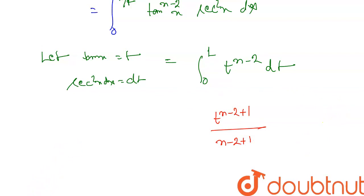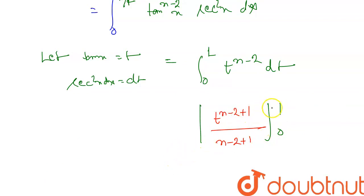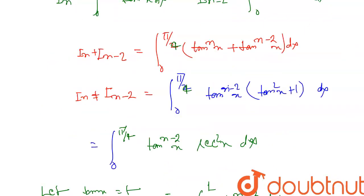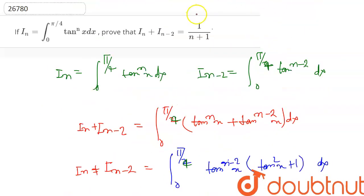On integrating t^(n-2), this gives [t^(n-2+1) / (n-2+1)] with limits 0 to 1. On putting the limits, this equals 1/(n-1). This is the required answer: In + In-2 = 1/(n-1).